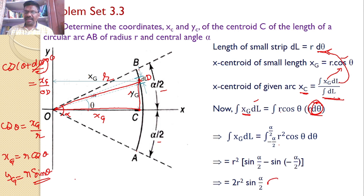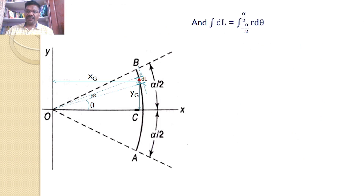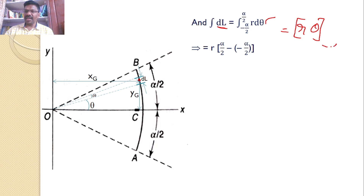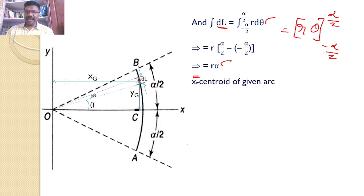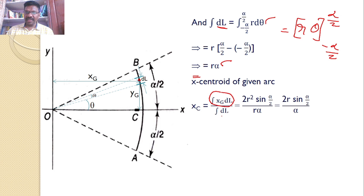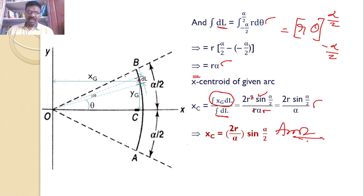Now we calculate the denominator ∫ dL = ∫ from −α/2 to +α/2 of R·dθ. Upon integration we get R·θ evaluated from −α/2 to +α/2, which gives R·(α/2 − (−α/2)) = R·α. Therefore, XC = (2R²·sin(α/2)) / (R·α). The R cancels, giving XC = (2R/α)·sin(α/2) as the X coordinate of the centroid of circular arc AB.